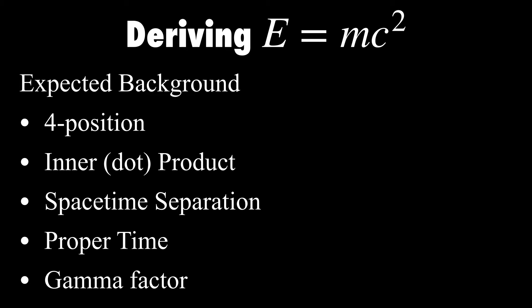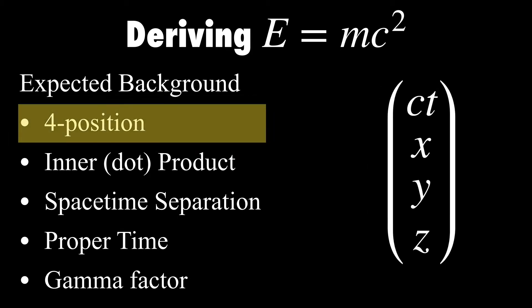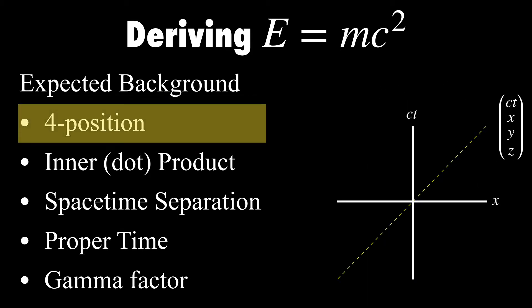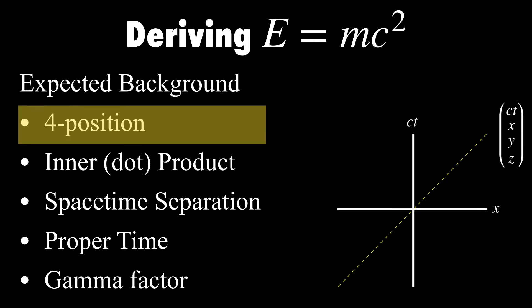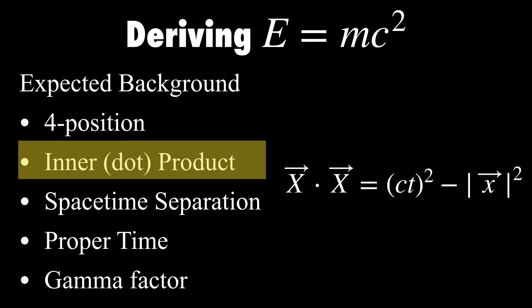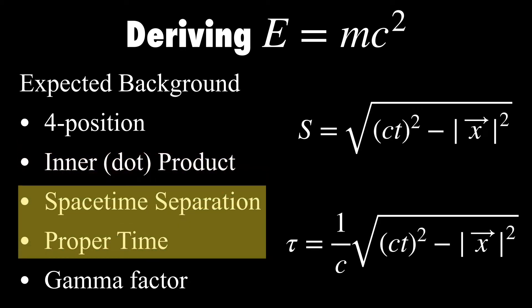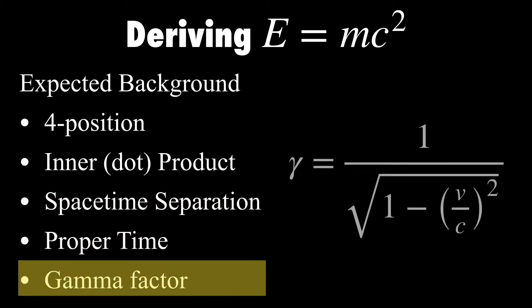To understand this derivation, I'm expecting a base level knowledge of special relativity. Unfortunately, to derive the most famous equation in physics, we're going to need a little bit of background. So you should know that four-position is a vector describing events in spacetime. The inner product in Minkowski space puts a negative sign on the position coordinates, a hint of hyperbolic geometry. The terms spacetime and proper time should be familiar to you. And of course, know what the gamma factor is.